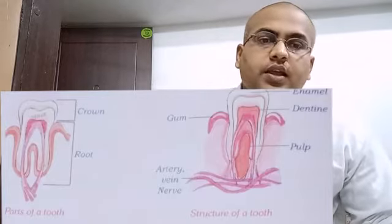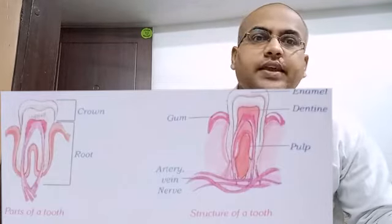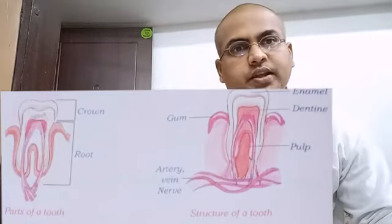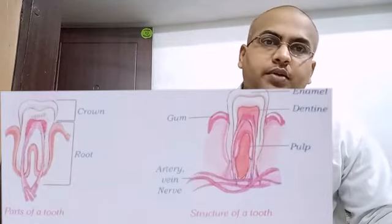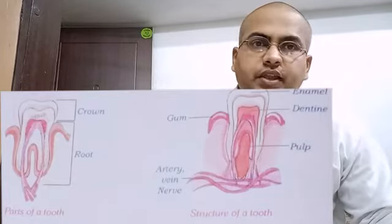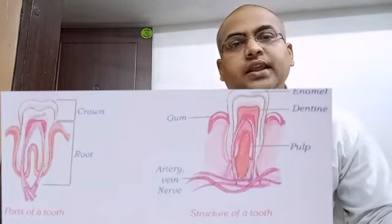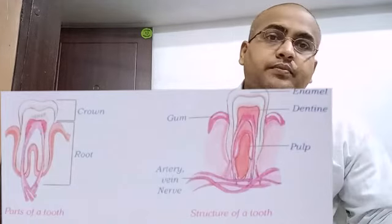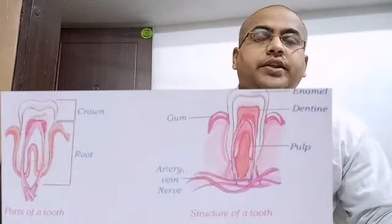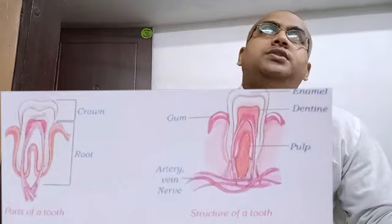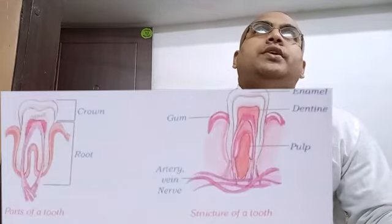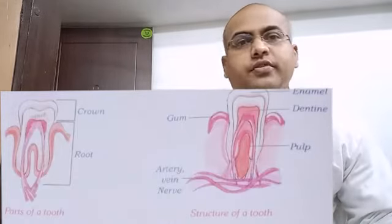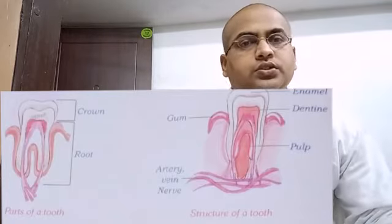Next question: Name the layers of the teeth and support your answer with a diagram. There are three layers of teeth. Number one, the outermost and hardest substance in the body, that is enamel. Number two, dentine. Number three, pulp. There is a diagram in the book — diagram 6.6 — which shows the layers of the teeth. Draw that diagram in your fair copy.